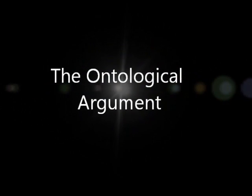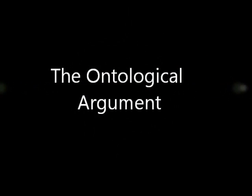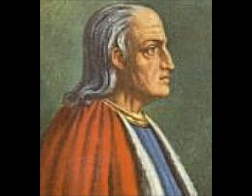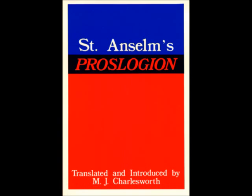The Ontological Argument. The first ontological argument was proposed by Anselm of Canterbury in 1078 A.D. in his writings called Proslogion. In the Proslogion, Anselm wanted to show a very simple yet understandable explanation for the existence of God.